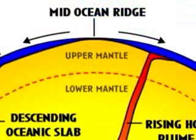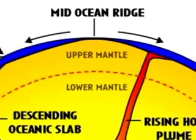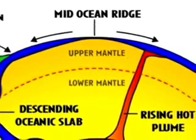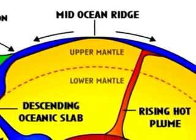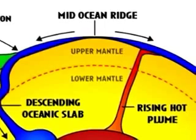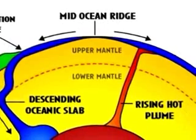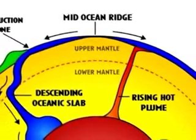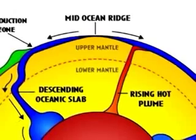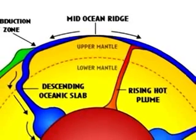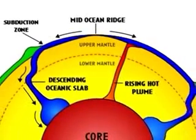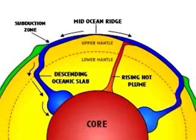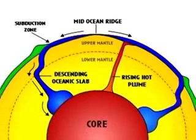Oceanic plates spread apart at mid-ocean ridges where new crust is formed. As the oceanic plates move away from the ridge, they cool and thicken and ultimately re-enter the mantle at subduction zones, then sinking to the bottom of the mantle.